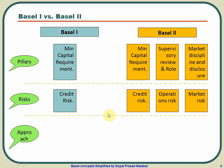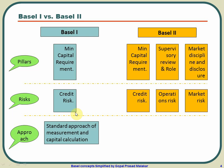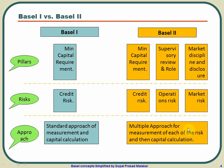If you think of the approach also, Basel 1 has only a standard approach for measurement and capital calculation — you classify assets into four categories and calculate the asset weightage. Whereas in Basel 2, you have multiple approaches for each kind of risk, be it credit risk, operational risk, or market risk. Accordingly, the associated capital requirement — how much capital is required for each risk — is also determined differently.